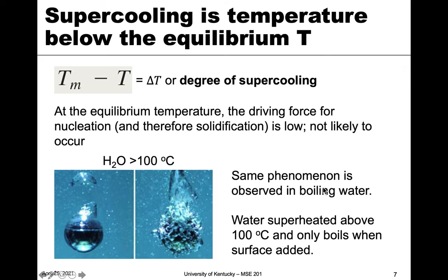The water needs to be superheated above 100°C for it to boil. What you'll see is that if you add something like a surface, it can start to boil even though it's above 100°C. So even though we say equilibrium temperatures are at a certain point, it doesn't always mean that's where the reactions occur. Boiling can happen above equilibrium, and solidification most likely happens below at a given degree of supercooling.